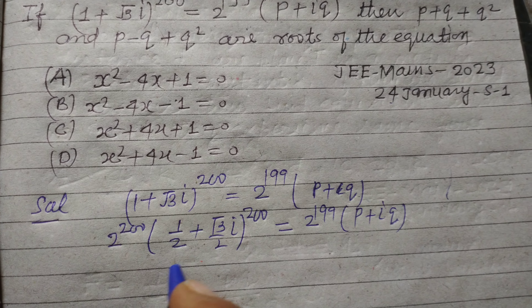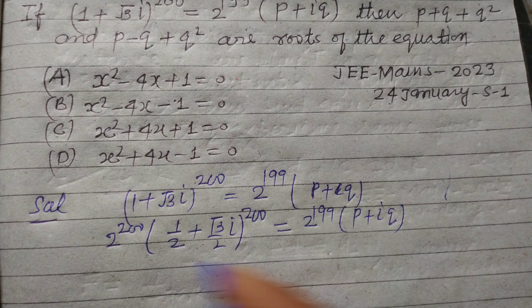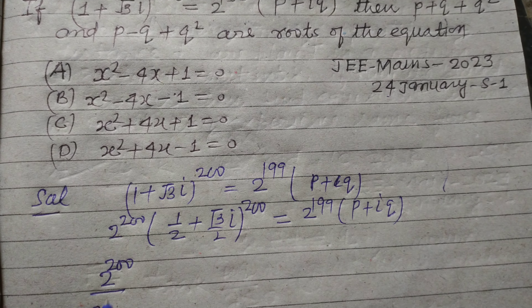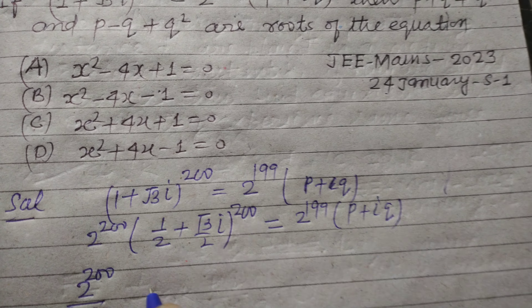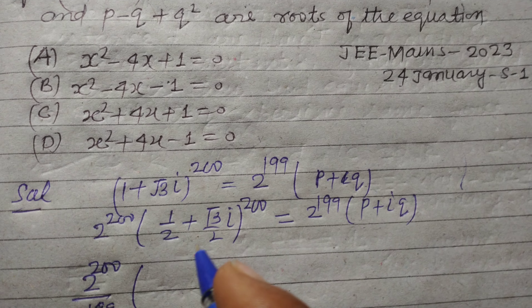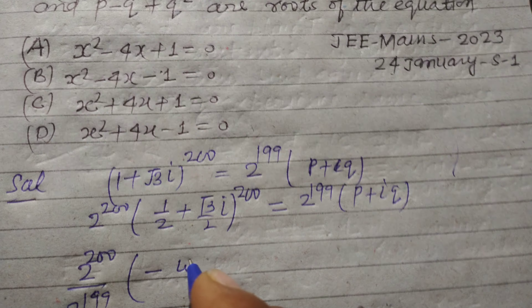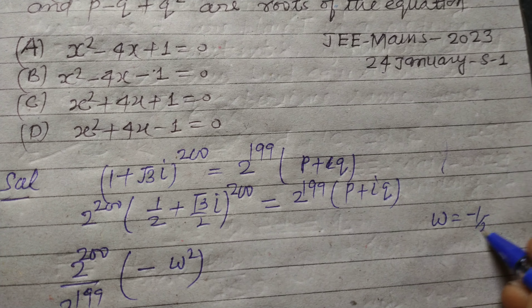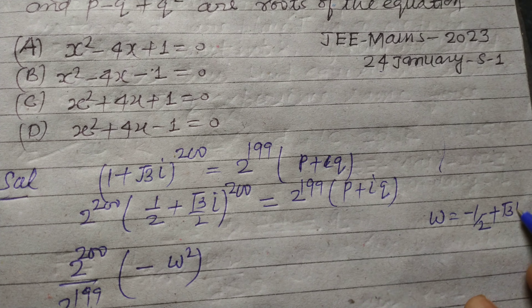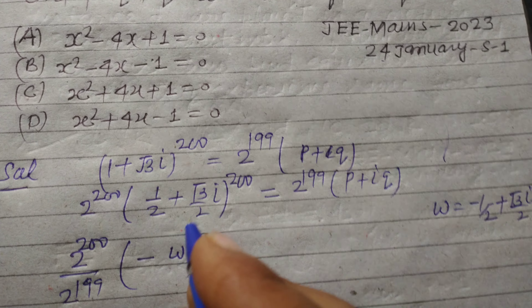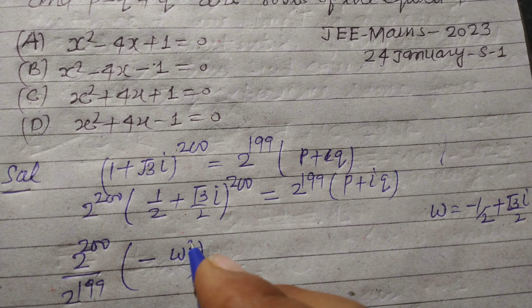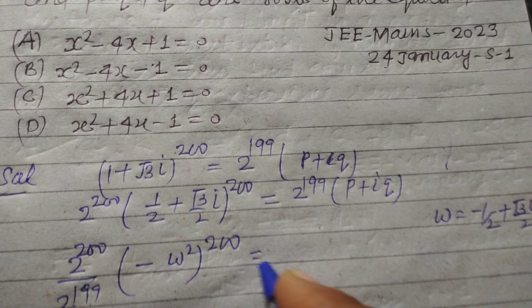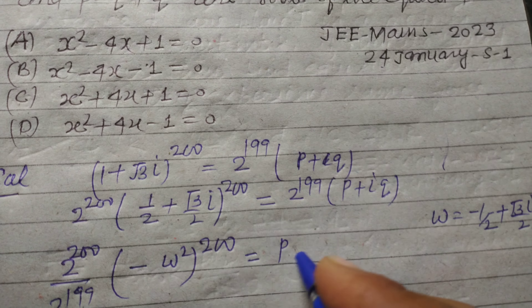Now we divide: 2^200 divided by 2^199. What is (1/2 + (√3/2)·i)? This is ω (omega), since you know that ω = -1/2 + (√3/2)·i. Actually this is ω², so we get ω² to the power 200 equals p + i·q.